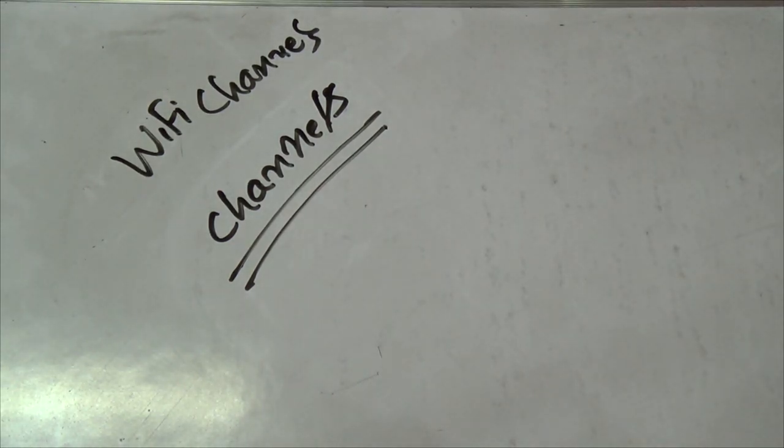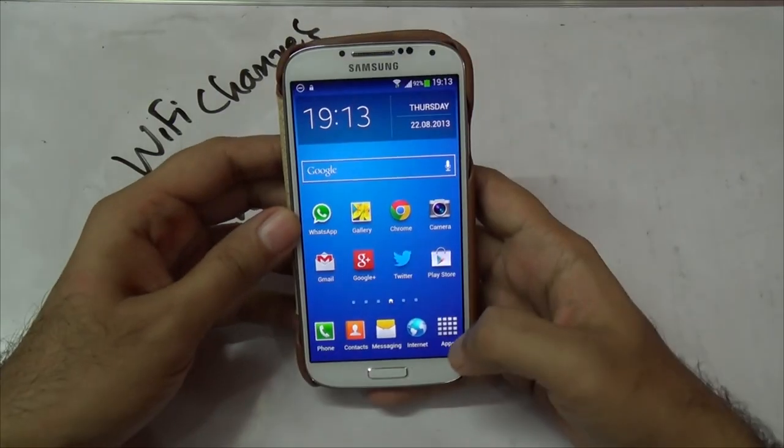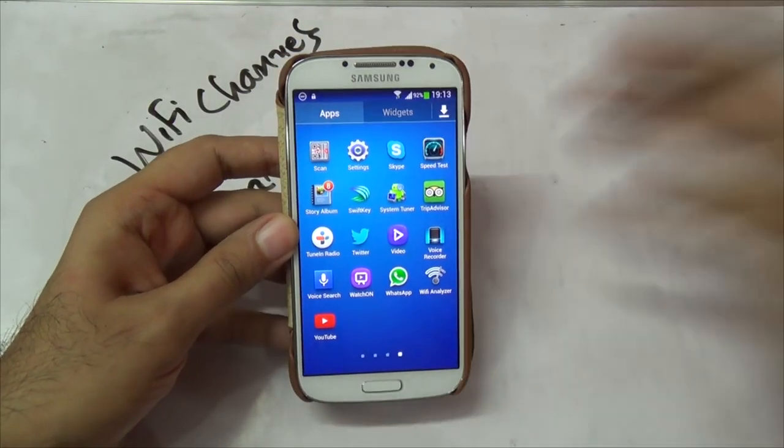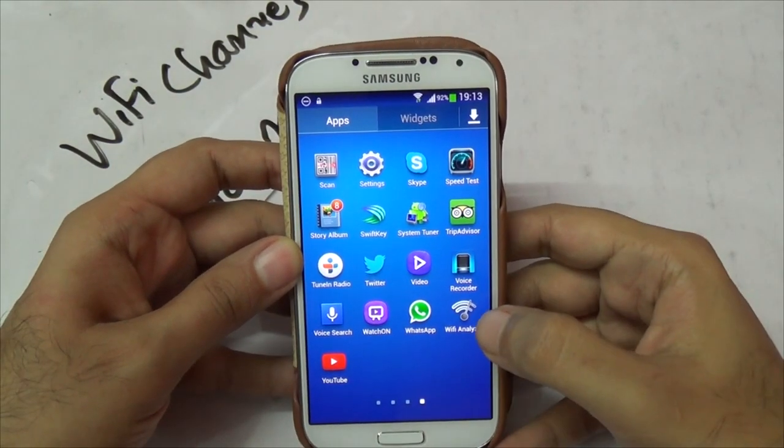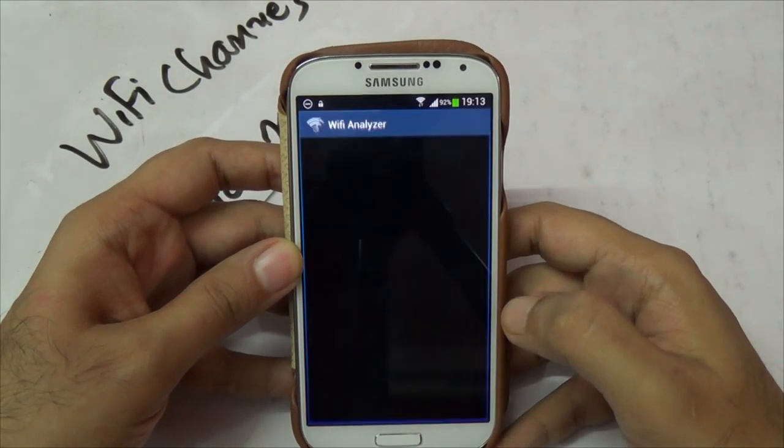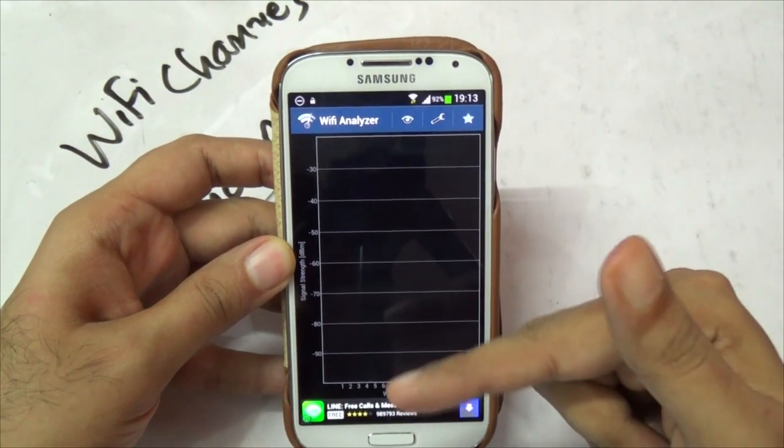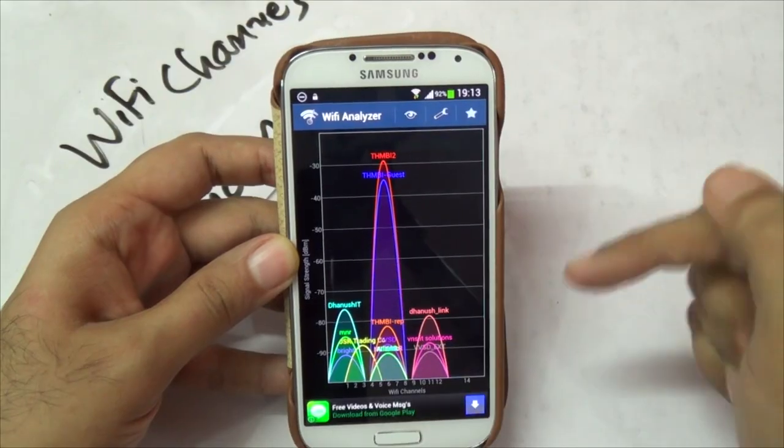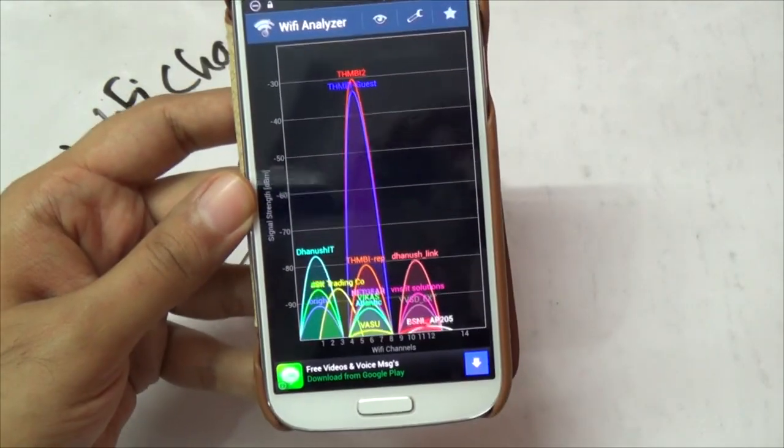I'm going to show you how you can do that. You need to first use a utility. For example, if you have an Android phone, this is an Android phone, you will see this Wi-Fi analyzer. This is a free software that you can download on your Android device. When you open it, it will take a couple of seconds and now it's scanning all the Wi-Fi networks that are around this area.